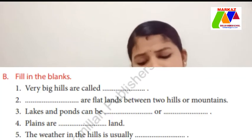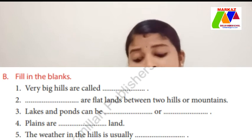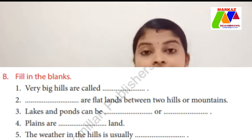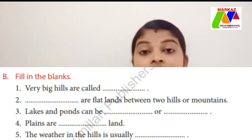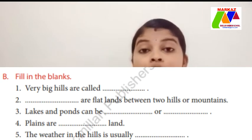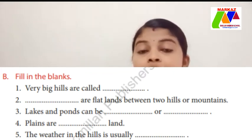Now B: Fill in the blank. The first one: 'Very big hills are called blank.' Children, the answer is mountains — M-O-U-N-T-A-I-N-S — mountains.